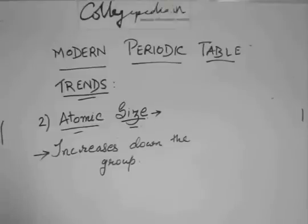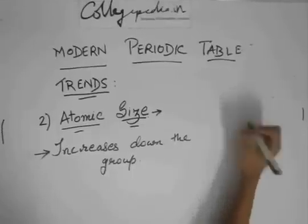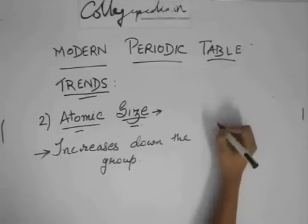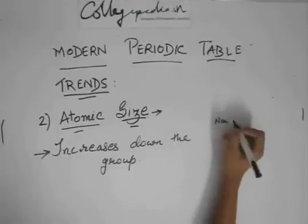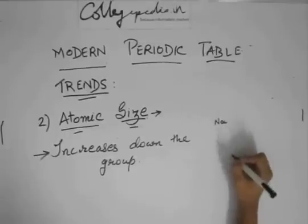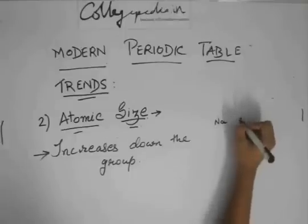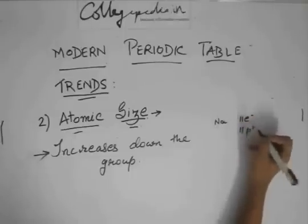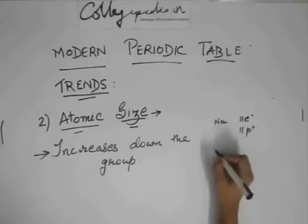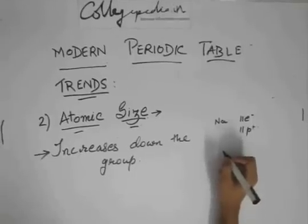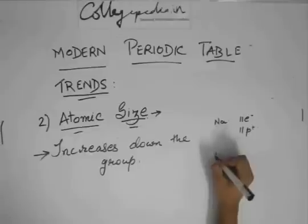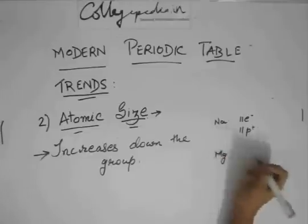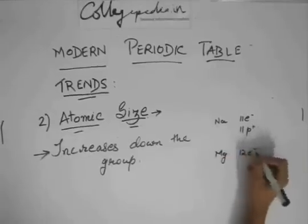Now, let us see what happens to the atomic size along a period. Along a period, suppose you have sodium. Sodium has 11 electrons and 11 protons. Then we have magnesium. It has 12 electrons and 12 protons.